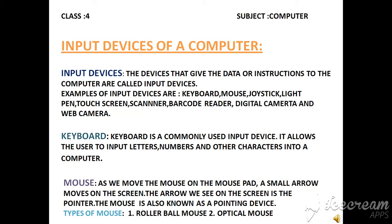There are two types of mouse: rollerball mouse and optical mouse. A rollerball allows the mouse to move on a flat surface. An optical mouse uses a light source to detect the movement of the mouse.